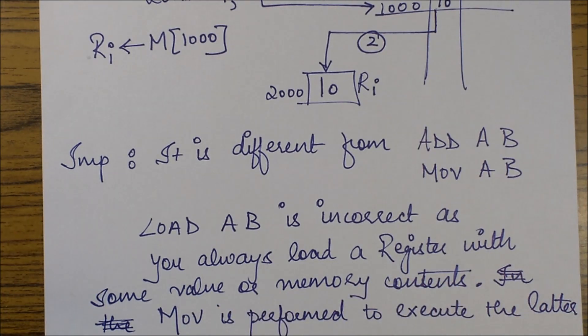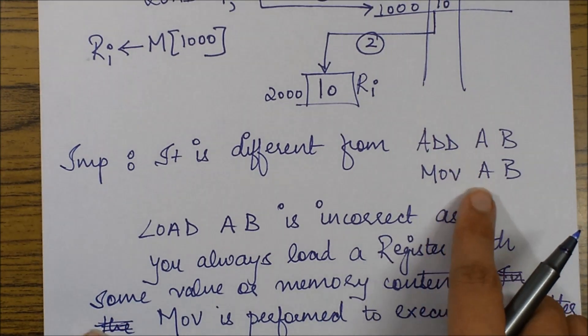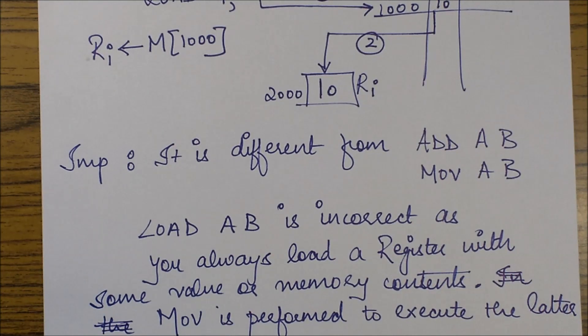In case you want to load a register with some other register's value, you always perform the move operation like this, move AB. You do not perform the load operation.